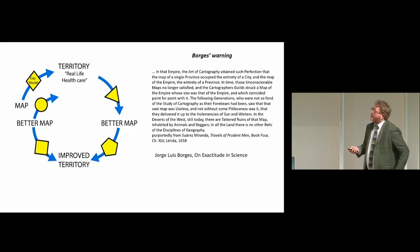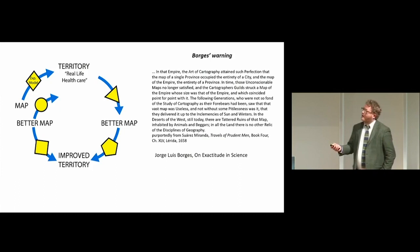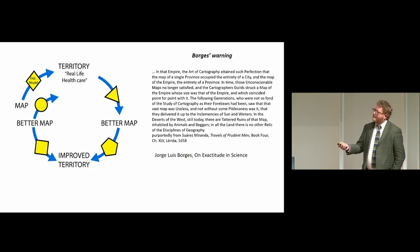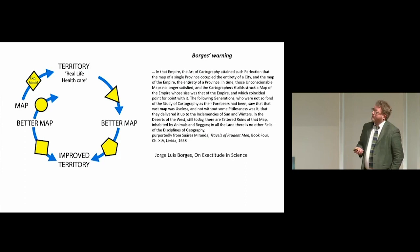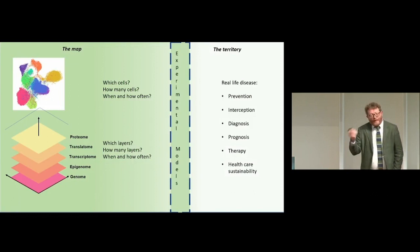Instead, what we want is an iterative circle — a Wiltshire circle — in which we interrogate the territory through experimental models, we make maps, and these maps will hopefully improve the territory. They will invest the territory with this knowledge, and in this iterative cycle of insight and intervention we really think to navigate this diet of map and territory.